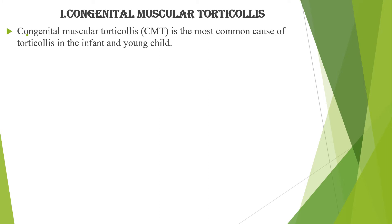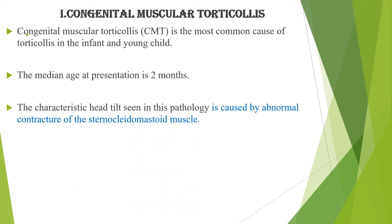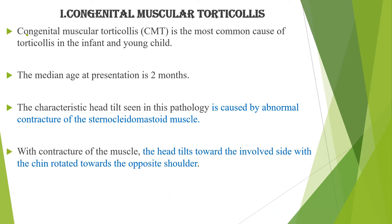Congenital muscular torticollis is the most common cause of torticollis in infants and young children, and the median age at presentation and diagnosis is around two months of age. The characteristic head tilt seen in this pathology is caused by abnormal contracture of the sternocleidomastoid muscle. With contracture of the muscle, the head tilts towards the involved side, with the chin rotated towards the opposite shoulder.